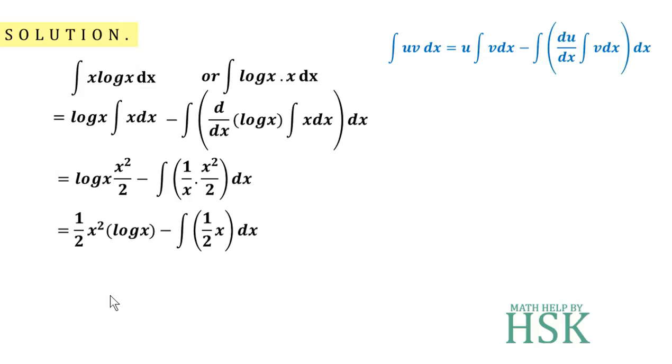Now this term as it is. Integration of x is x squared upon 2. So I get the second term as minus 1 by 2 x squared upon 2 plus C, or 1 by 2 x squared log x minus 1 by 4 x squared plus C, which is my required answer.